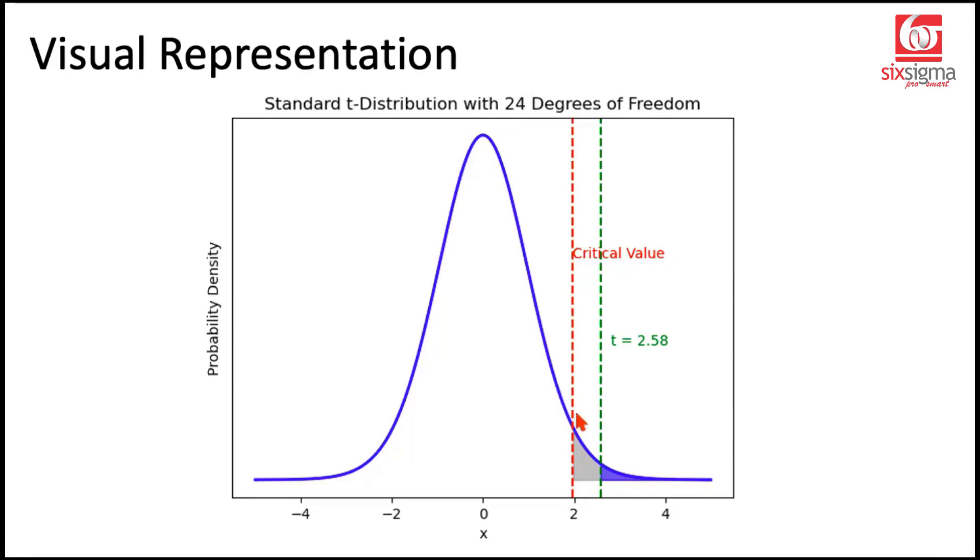Area covered to the right of this green line is also less than the overall area covered by the critical region, or the alpha value. So both the ways, from a critical value approach, this is clearly falling in the rejection region. From a p-value approach, in this case, the p-value, as we see with this blue shaded region, is of course less than the overall gray shaded region. That's why we will reject the null hypothesis.